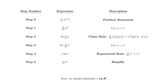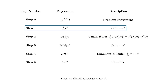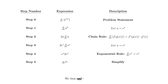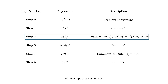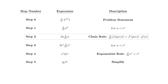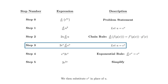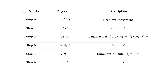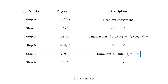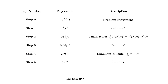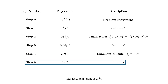First, we should substitute u for e to the x. We then apply the chain rule. We then substitute e to the x in place of u. The derivative of e to the x is simply e to the x. The final expression is 2 times e to the 2 times x.